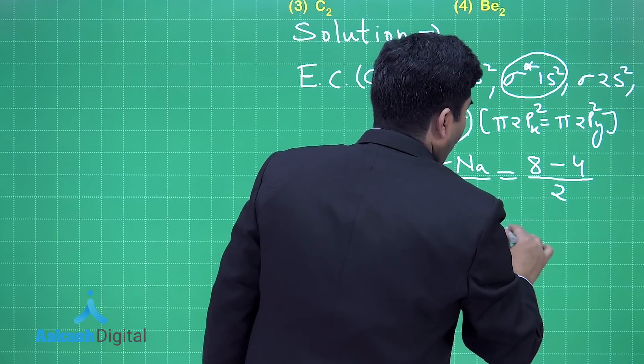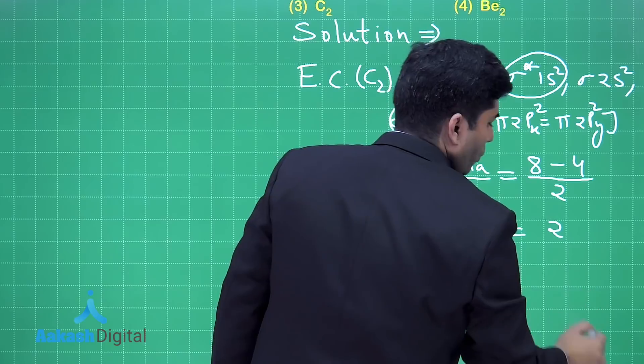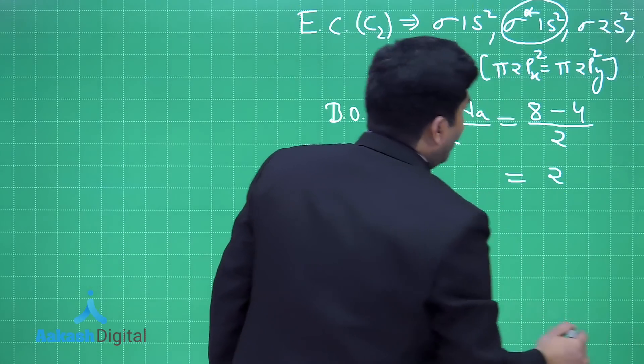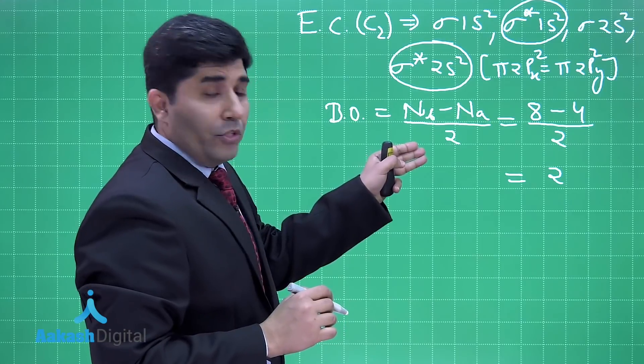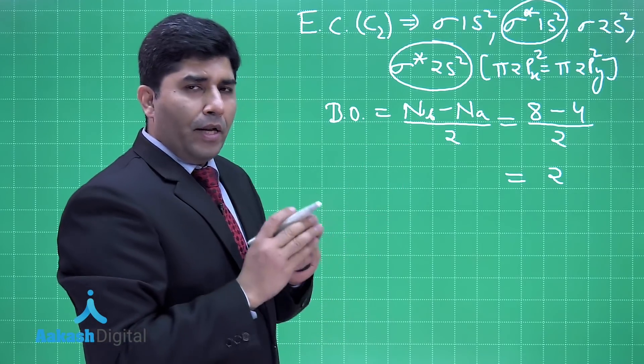(8-4)/2 = 2. The bond order is 2, and as per the question, these two bonds are pi bonds.